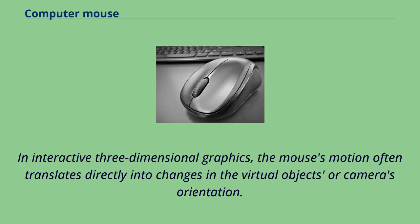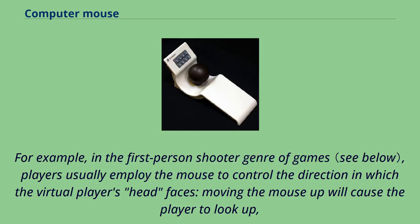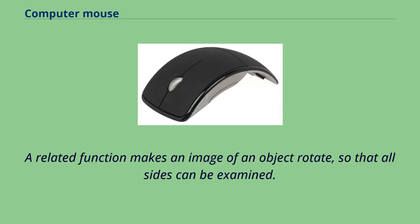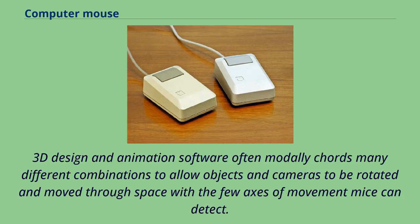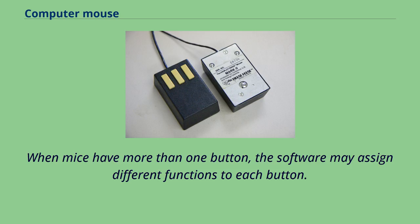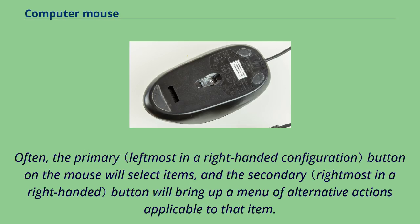In interactive three-dimensional graphics, the mouse's motion often translates directly into changes in a virtual object's or camera's orientation. In first-person shooter games, players use the mouse to control the direction the virtual player faces — moving the mouse up causes the player to look up. 3D design and animation software often uses many different button combinations to allow objects and cameras to be rotated and moved. When mice have more than one button, software may assign different functions to each — often the primary button selects items and the secondary button brings up a menu of alternative actions.